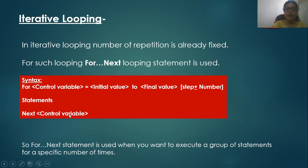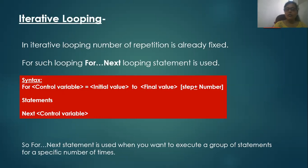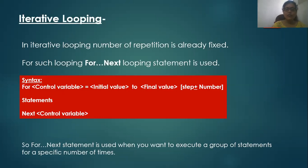When the loop gets executed, the NEXT statement checks whether the control variable has reached the final value. If it has not, it moves back into the loop again. So the FOR-NEXT statement is used when we want to execute a group of statements for a specific number of times. You must learn the format of the FOR-NEXT statement — syntax is simply the format in which you use the statement.